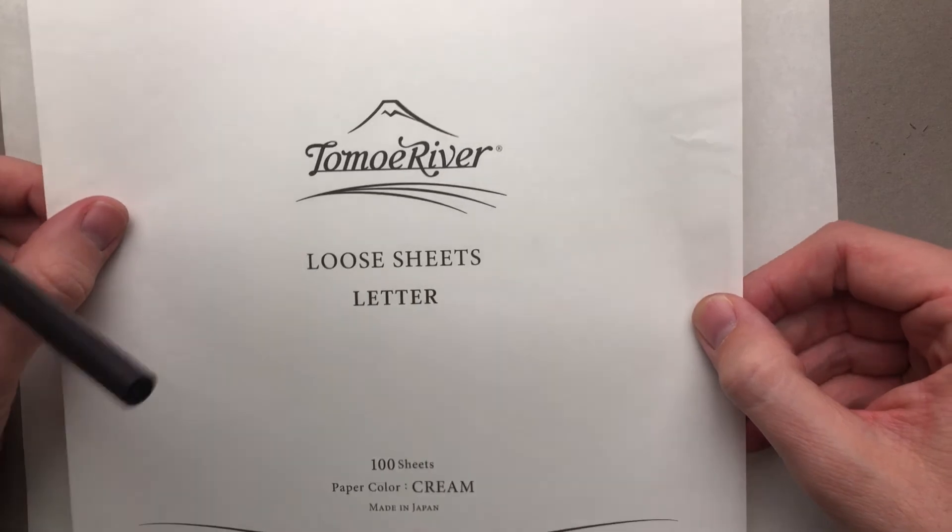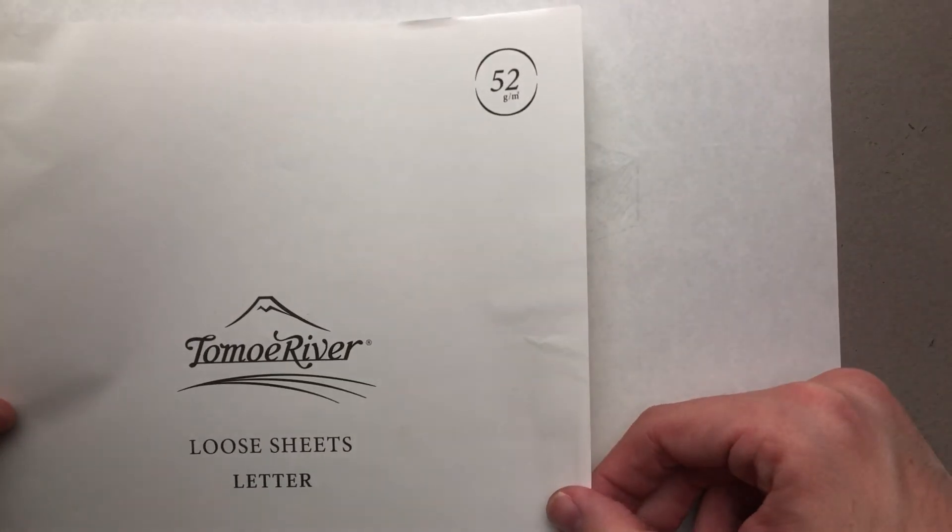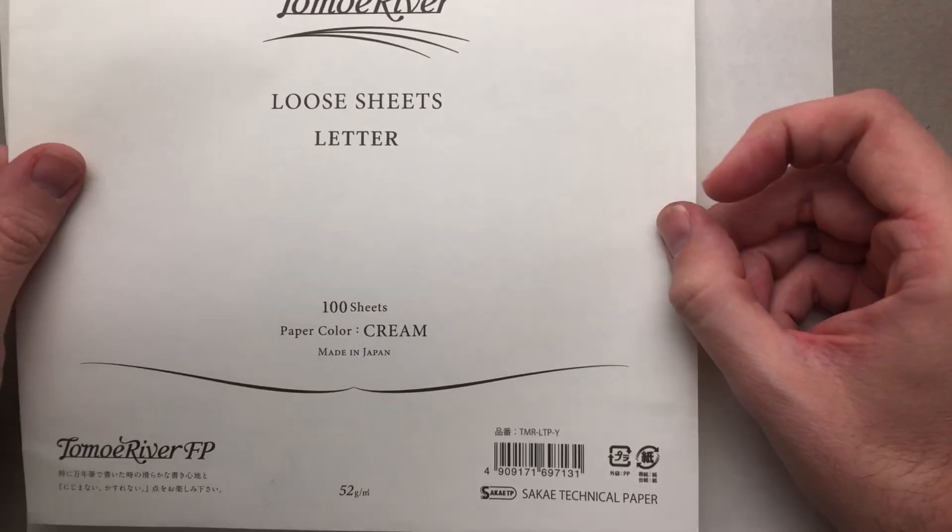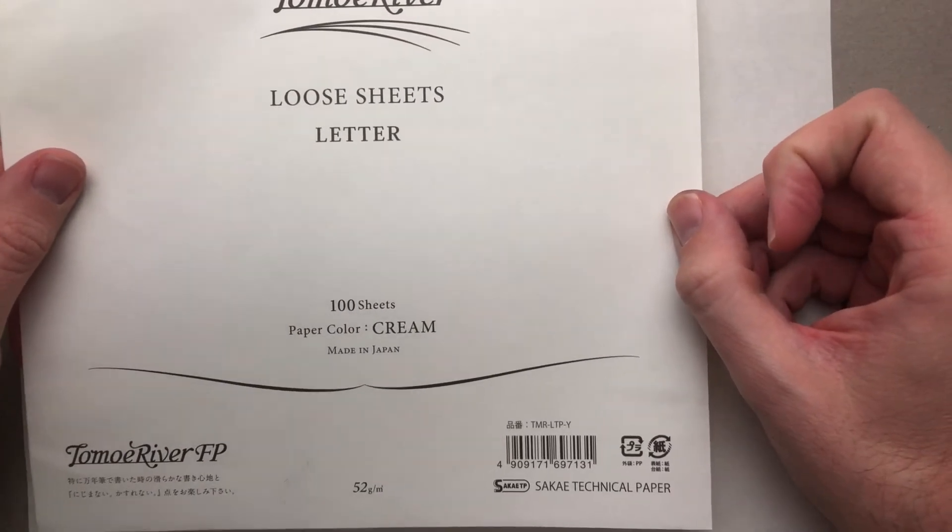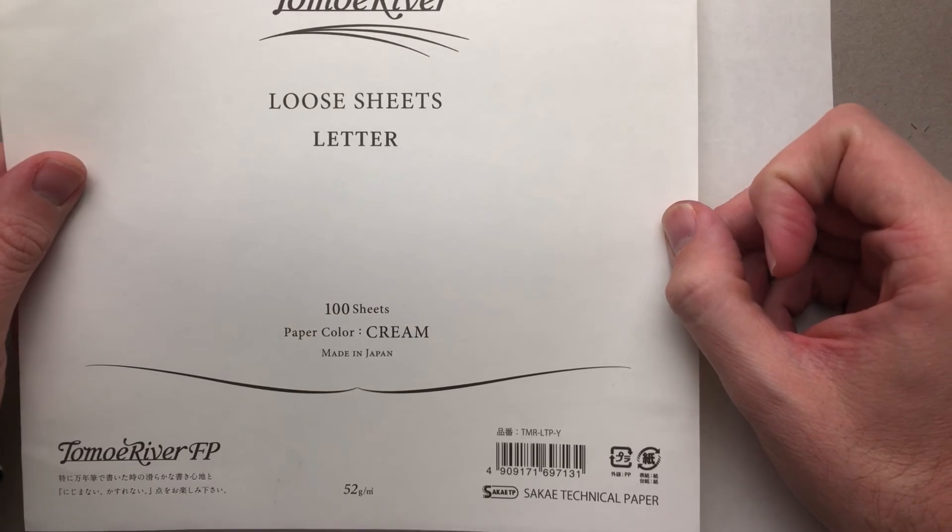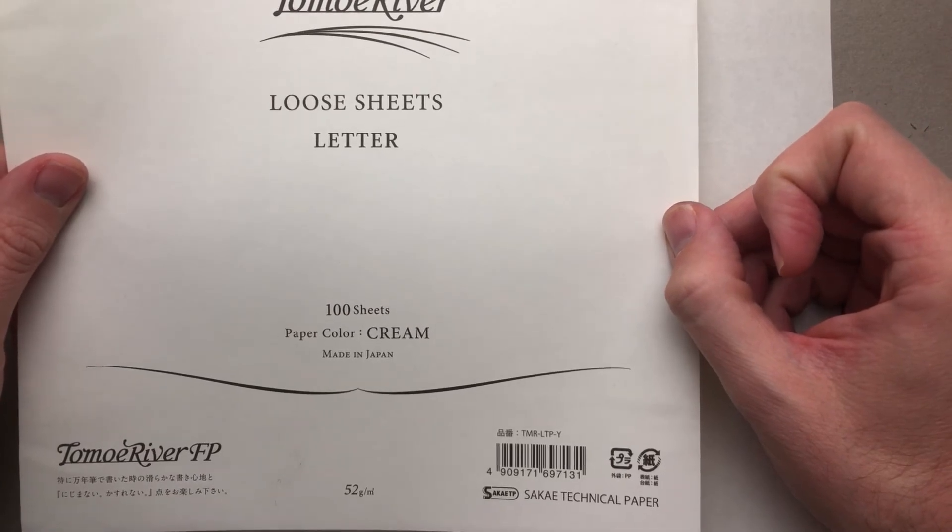It's the Tomoe River 52 grams per square meter. And it's the cream color. They sell a white color too, but I hope the cream had a little bit of elegance to it. So we're going to do today's drawing on that paper. Excited.